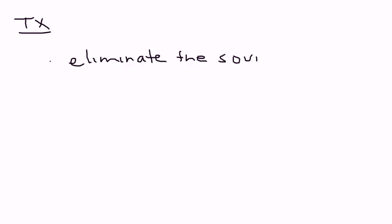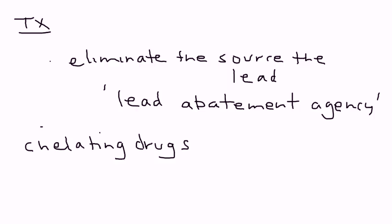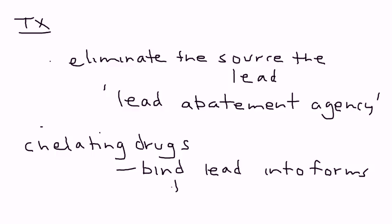In terms of treatment, you have to eliminate the source of the lead. In North America, you can call an agency and they will come and remove all the lead from the home or wherever it is — an old building. It's called the lead abatement agency. Then you need to give certain drugs called chelating drugs, which bind lead and basically convert it into forms that the body can then excrete.